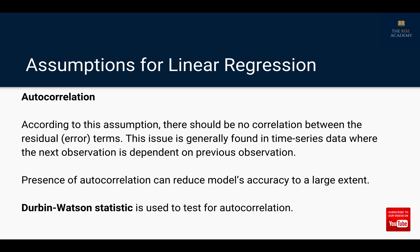Next is autocorrelation — there should be no correlation between the residual error terms. This issue is generally found in time series data where the next observation is dependent on the previous observation. Presence of autocorrelation can reduce the model's accuracy. There is something called the Durbin-Watson statistic which is used to test for autocorrelation.